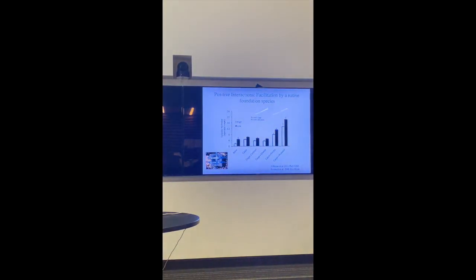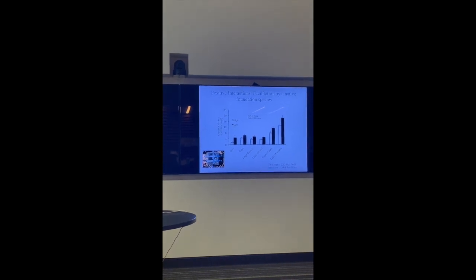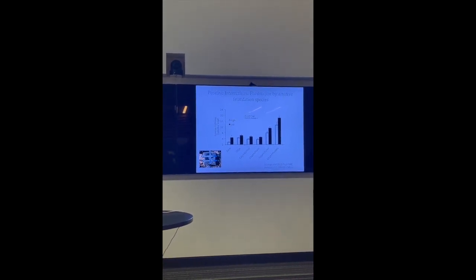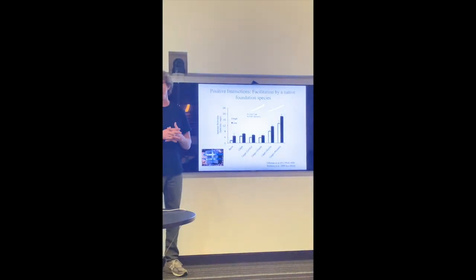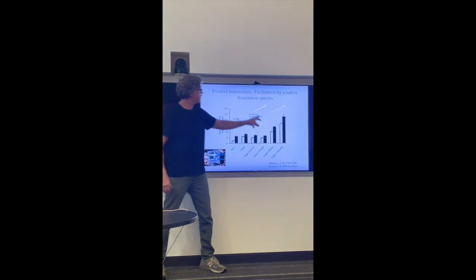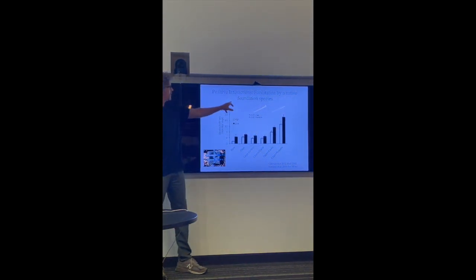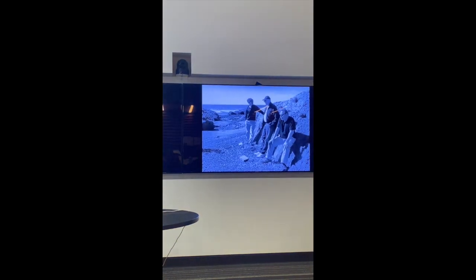It's only when you put rocks or mussel mimics or mussels themselves that you get biodiversity coming back. These mussels are creating this really nice condominium that doesn't dry out. All these animals, if you tether them, die within about 45 minutes. They can't handle that stress. So the whole community was facilitated. We call that whole community facilitation by a foundation species under stress.